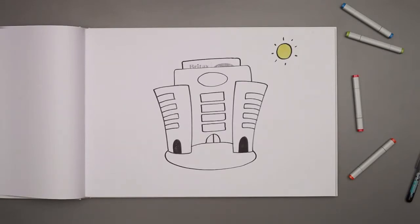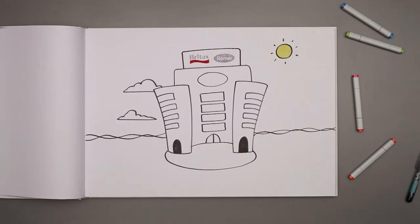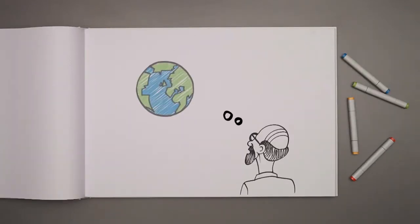So we challenged our brightest minds to develop a new Group 2-3 seat that would become Kidfix XP-6, a seat that writes a new page in the Britax Roma safety story.